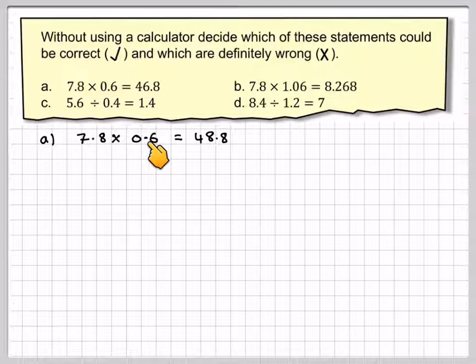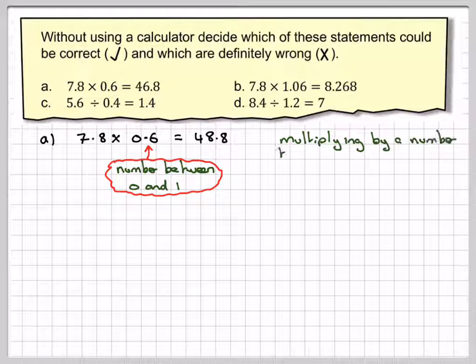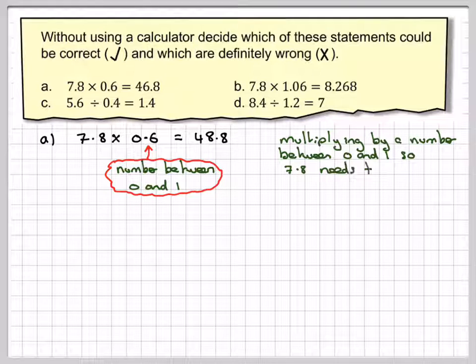And what we need to do is look at this number here and decide that this number is between 0 and 1. So the rule is if the number is between 0 and 1, if you multiply by a number between 0 and 1, then the original number here needs to decrease, needs to get smaller. So this 7.8 hasn't actually decreased here, so therefore this must be wrong.